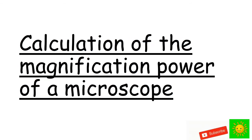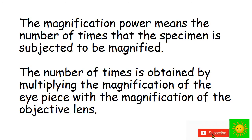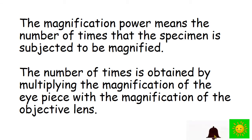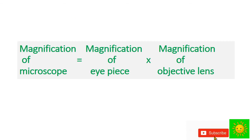Let's see the calculation of the magnification power of the microscope. The magnification power means the number of times that the specimen is magnified. This number is obtained by multiplying the magnification of the eyepiece with the magnification of the objective lens. This is the formula: magnification of the microscope equals magnification of the eyepiece multiplied by magnification of the objective lens.